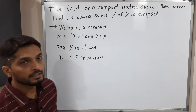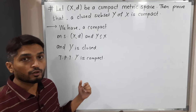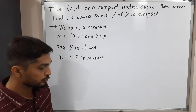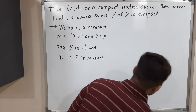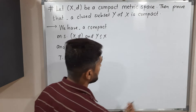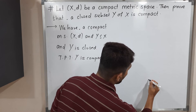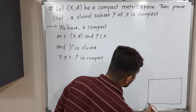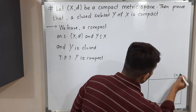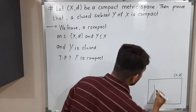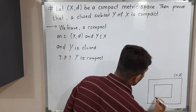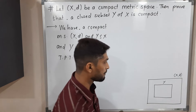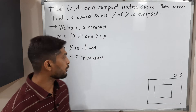So here we have a metric space X with metric d, which is compact. We have a subset Y of X which is closed, and we have to prove that Y is compact. Let me draw a diagram so you can easily understand. So this is metric space X, and we have a closed subset Y of that metric space X.